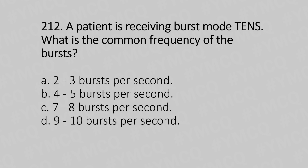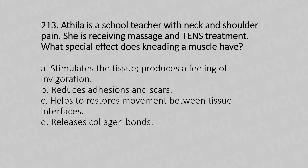Question 212: A patient is receiving burst mode TENS. What is the common frequency of bursts? Option A: 2 to 3 bursts per second. Option B: 4 to 5 bursts per second. Option C: 7 to 8 bursts per second. Option D: 9 to 10 bursts per second. The answer is Option A: 2 to 3 bursts per second.